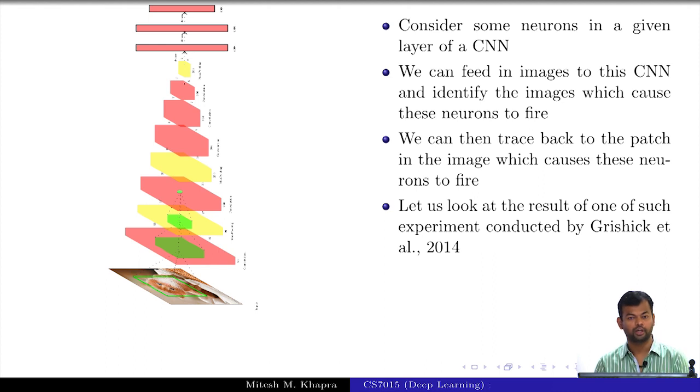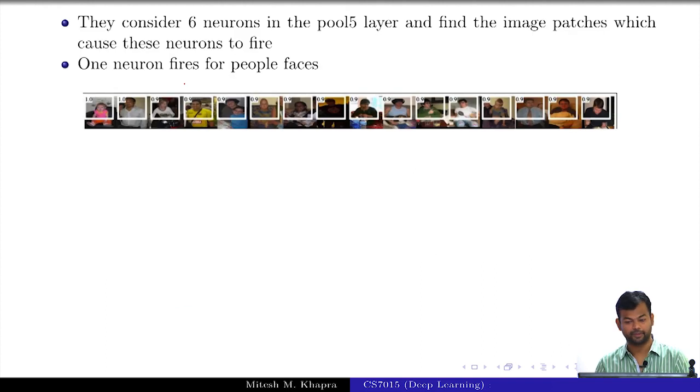I look at which images for which this neuron had a high output, and for those cases I will go back and trace the image and see which patch of the image actually caused this to fire. I want to see whether my neurons are actually learning things like nose detector or eye detector or something. Let us look at the results of one such experiment done by a group of researchers.